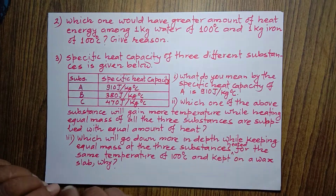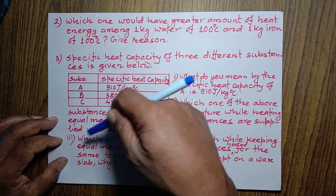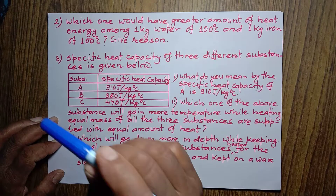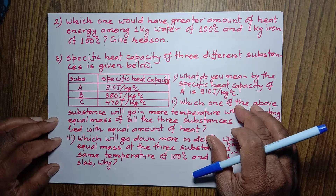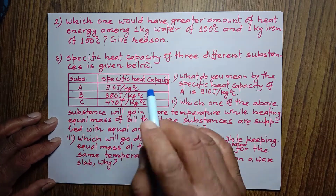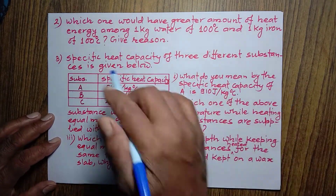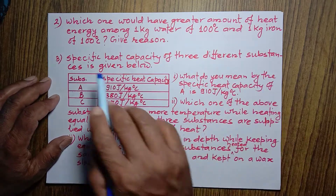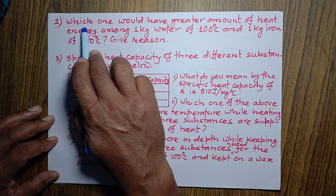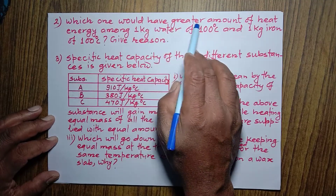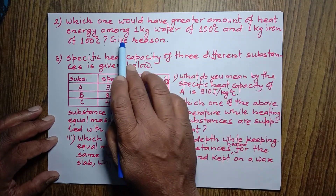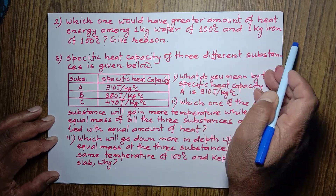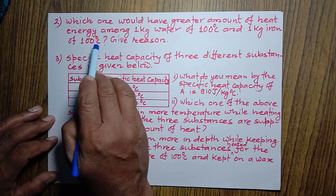Today I am talking about some questions related to heat. In the previous class I told you about the first question — the temperature of an island remains more or less constant throughout the year. Now, the second and third questions we are going to talk about today. Number two is: which one would have a greater amount of heat energy among 1 kilogram water at 100 degree Celsius and 1 kilogram iron at 100 degree Celsius?